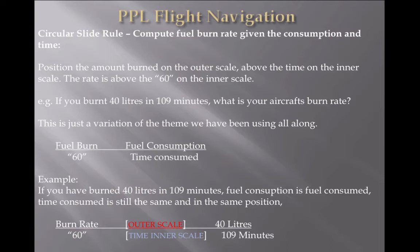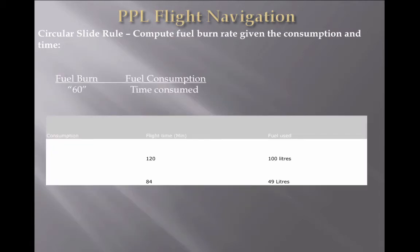Same again — variation on a theme. Fuel consumption on the outside, time consumed on the inside, and above your 60 marker will give you the burn rate. So in this example, if you've burnt 40 litres in 109 minutes: fuel consumed is 40 on the outer scale, 109 on the inner for your minutes of flight time. Then go over to your 60 triangle and it will give you the fuel burnt.